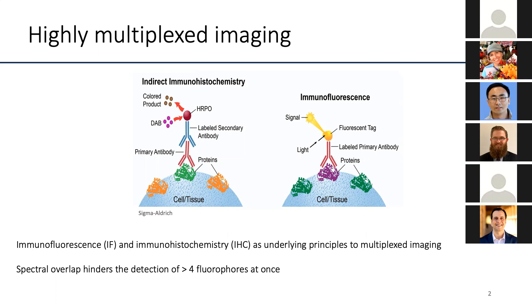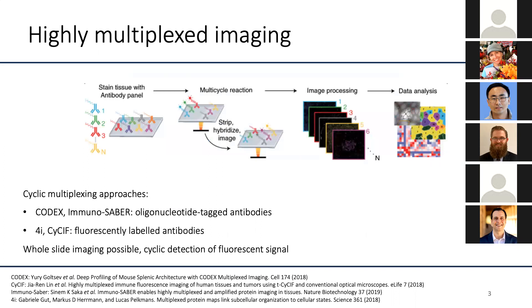The problem is that due to spectral overlap, you can only measure up to four fluorophores at once. Several groups have been working on tackling this issue with different technologies. There are two large directions: one is cyclic multiplexing, and another is where you use different tags on the antibodies.